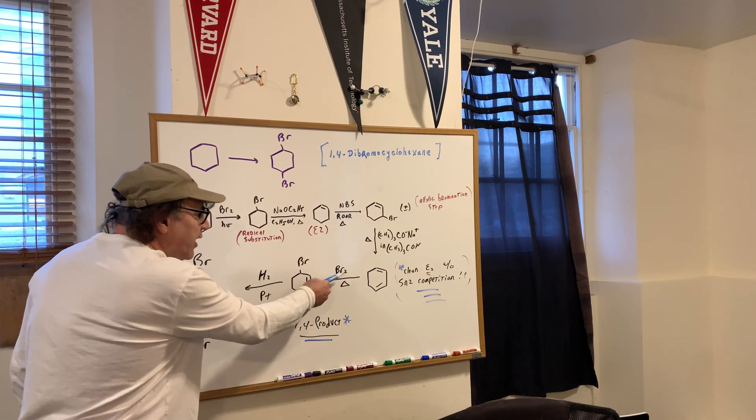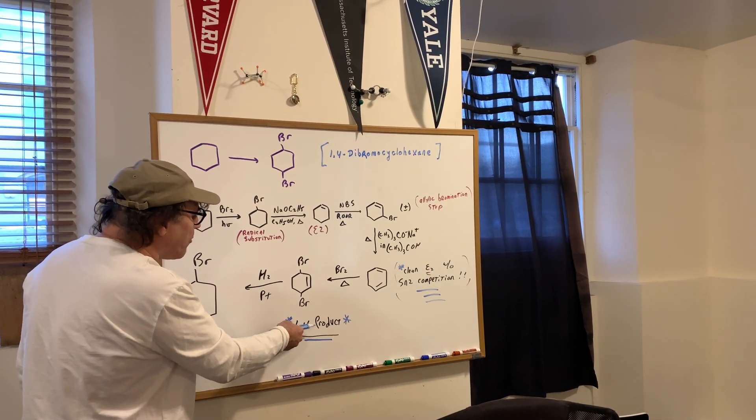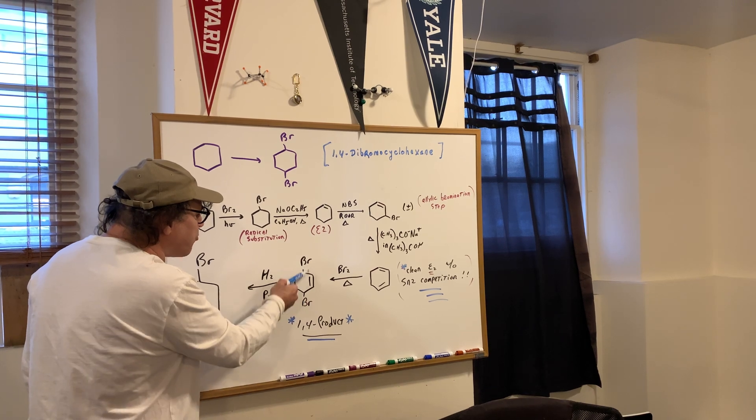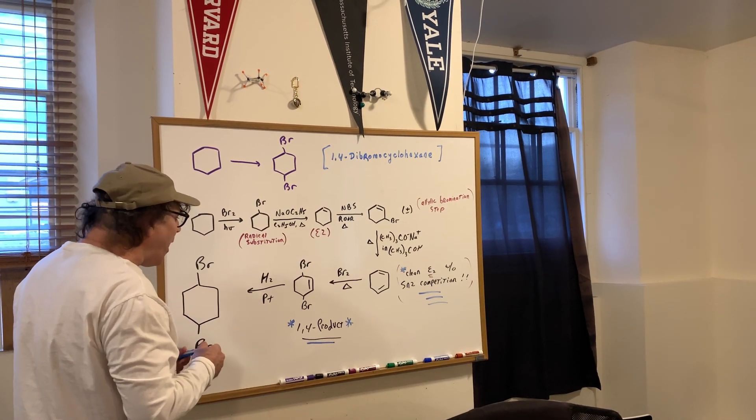Because if you don't do heat, then you would have the 1,2 competition. So this gives me the 1,4 product. And as you can see, the bromines are right where we want it. Hydrogen and clagnum does the job to finish it off.